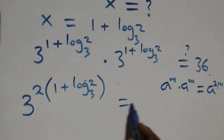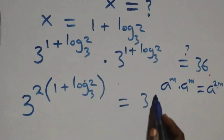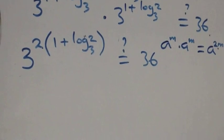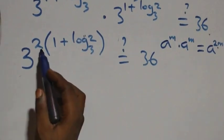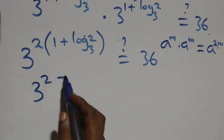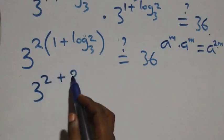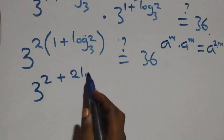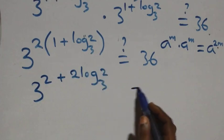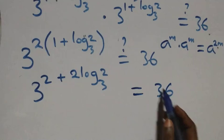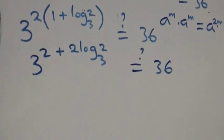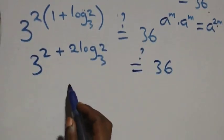Is it equal to 36? We open the bracket and have 3 raised to power 2 plus 2 log 2 base 3. Then we reverse the step, using the rule a raised to power m plus n equals a raised to power m times a raised to power n. So 3 squared — which is 9 — times 3 raised to power 2 log 2 base 3.